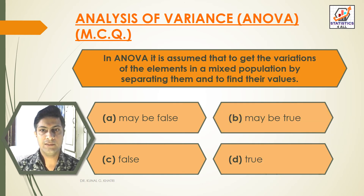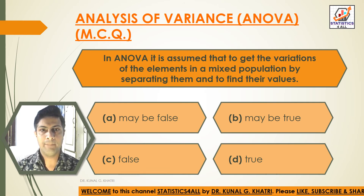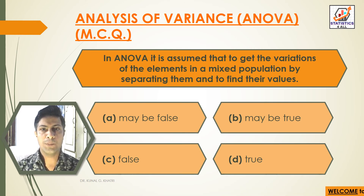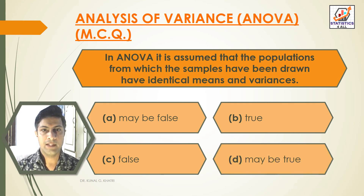Next question: In ANOVA, it is assumed that — to get the variations of the elements in a mixed population by separating them and to find their values. Option A: May be False. Option B: May be True. Option C: False. Option D: True. Answer: Option D, True.